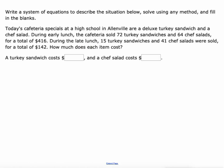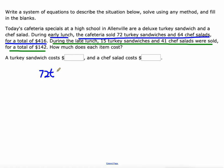Today's cafeteria specials at the high school in Allenville are deluxe turkey sandwich and a chef salad. During early lunch, the cafeteria sold 72 turkey sandwiches and 64 chef salad for a total of $416. During the late lunch, 15 turkey sandwiches and 41 chef salads were sold for a total of $142. How much does each item cost? So these numbers are a little bit bigger and uglier, but we can still set this up in standard form. 72 turkey sandwiches and 64 chef salads were $416. 15 turkey sandwiches and 41 chef salads equal $142.